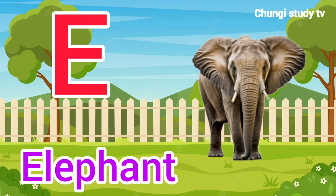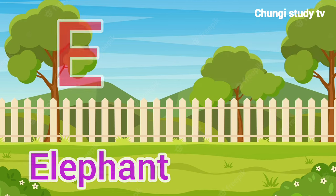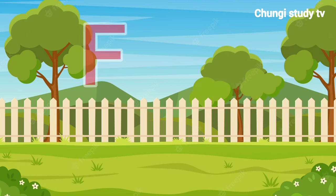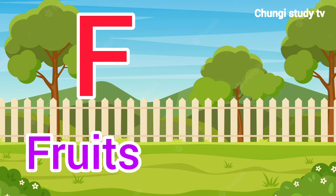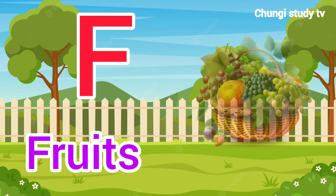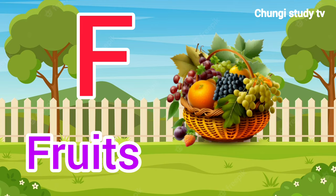E. Elephant. Elephant means Hathi. F, F for Fruit. Fruit means Phal.